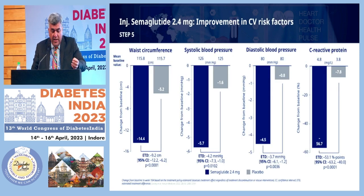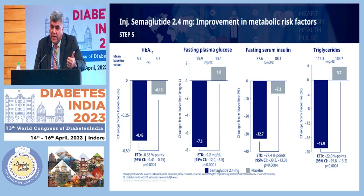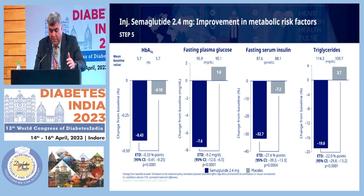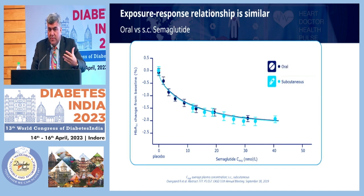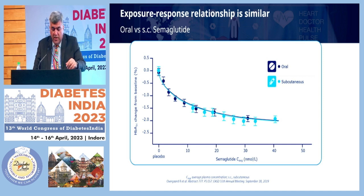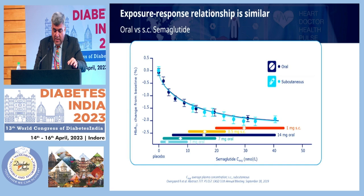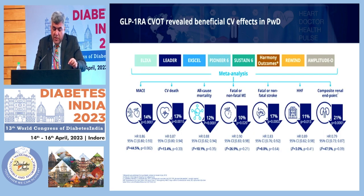Injectable semaglutide also showed improvement in cardiovascular risk factors: waist circumference, systolic blood pressure, diastolic blood pressure, and reduction in inflammatory markers like hsCRP. It also showed improvement in other metabolic risk factors: clear HbA1c reduction, reduction in fasting plasma glucose, fasting serum insulin down by 32.7%, and triglyceride reduction by 19 mg/dL. The exposure-response relationship for oral versus injectable semaglutide is similar, so data from injectable semaglutide is largely relevant to oral semaglutide as well.